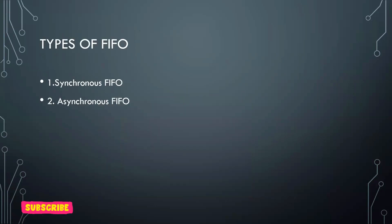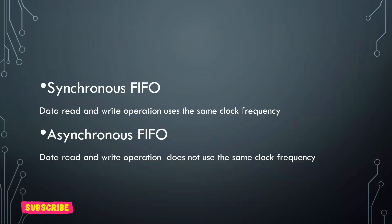Then basically, we have two types of FIFOs. The first one is synchronous FIFO and the other is asynchronous FIFO. What is the difference? In synchronous FIFO, the read and write operations use the same clock. You don't have separate clocks for read and write operation. A single clock is present which is used for both read and write operation.